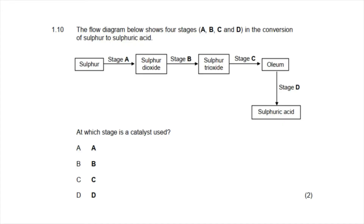Question 1.10: the flow diagram shows four stages A, B, C, and D in the conversion of sulfur to sulfuric acid in the fertilizer industry. The correct answer is stage B, when sulfur dioxide is converted into sulfur trioxide — this is the stage at which a catalyst is required.